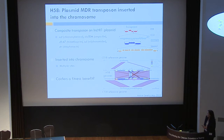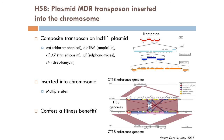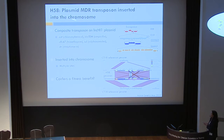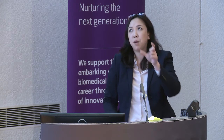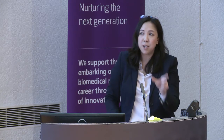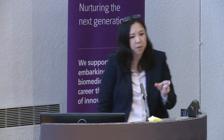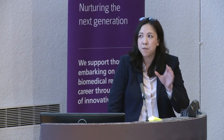We noticed that many isolates had lost their INC-HI1 plasmid, yet still maintained the resistance genes. We found that in the H58 lineage, the transposon that normally sits on the plasmid had the capability of jumping into the chromosome. We identified three chromosomal sites where this had occurred. This is very significant because it means H58 isolates can lose the plasmid but maintain the clinical MDR phenotype — and this may confer a fitness benefit.